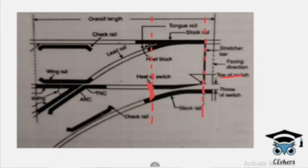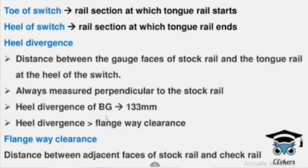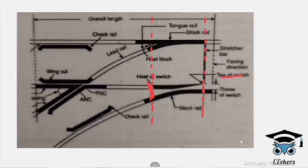The heel divergence of the broad gauge is 13.3 cm or 133 mm. The flange way clearance is the distance between adjacent faces of stock rail and check rail. The check rail is on the other side of the stock rail. The inner faces between the stock rail and check rail are called flange way clearance.